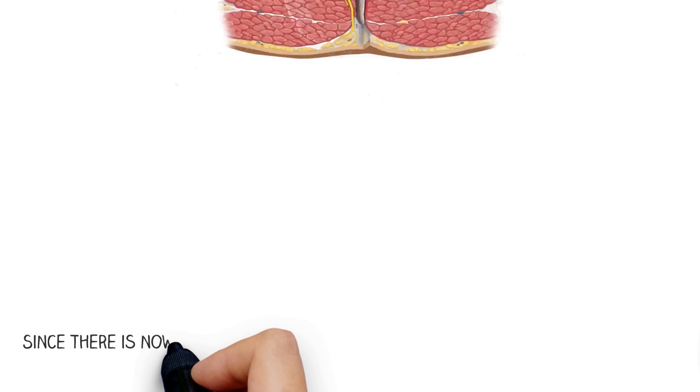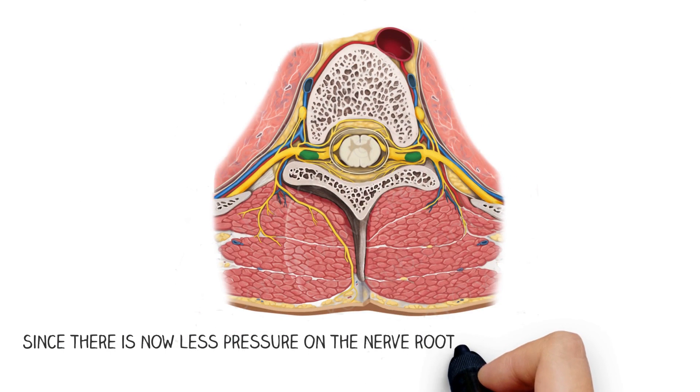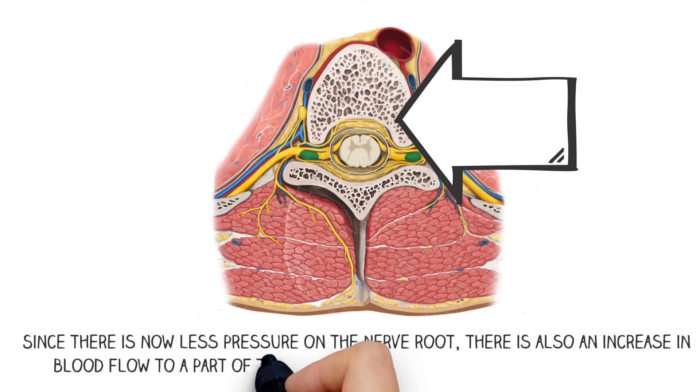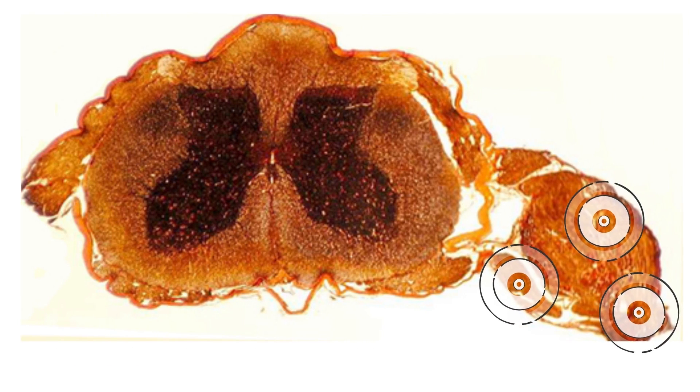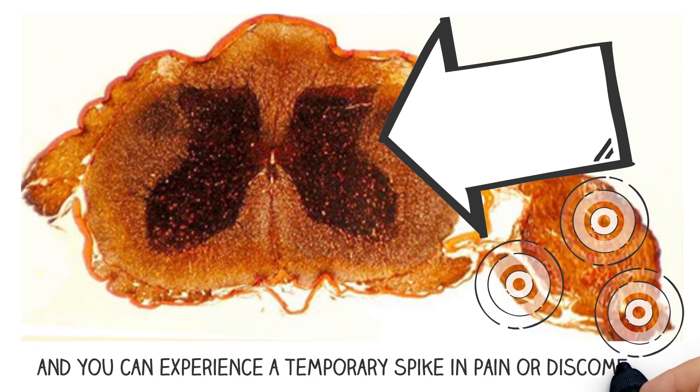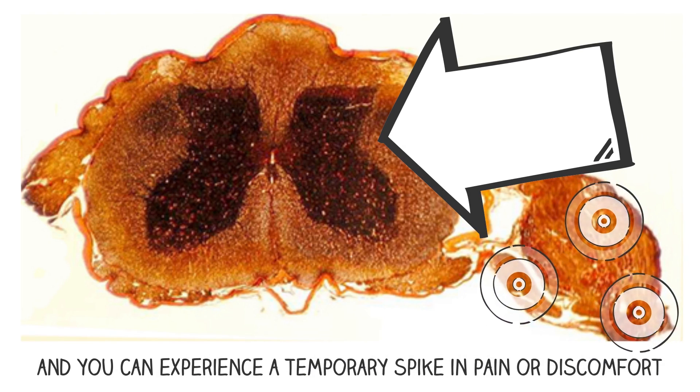Since there is now less pressure on the nerve root, there is also an increase in blood flow to a part of the nerve root called the dorsal root ganglion. The dorsal root ganglion can swell, and you can experience a temporary spike in pain or discomfort.